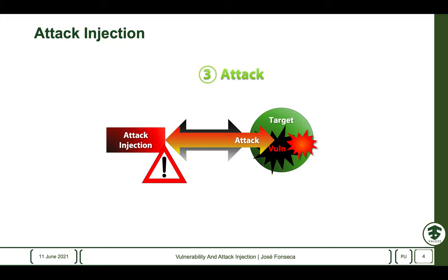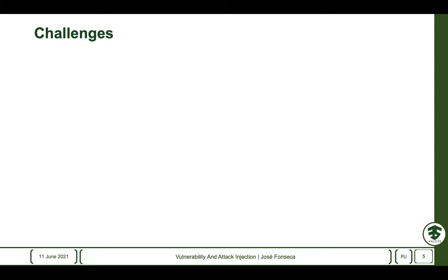There are several challenges in the development of the vulnerability and attack injection tool that need to be addressed in order to fulfil the objectives. Since it needs to read the source code of the target system and make modifications, it must have access to the source code and must be prepared for the programming language used.